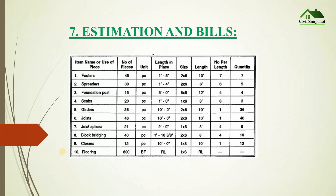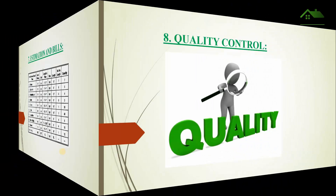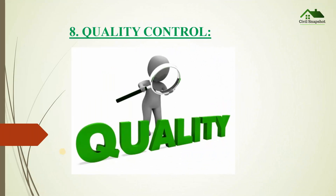Seventh one is estimation and bills. Estimation and bills should be prepared by a civil engineer in a construction project, so we must know about the estimation and billing details. Eighth one is quality control. Quality control ensures the profit of a project by reducing extra costs, so you must have knowledge of quality control.